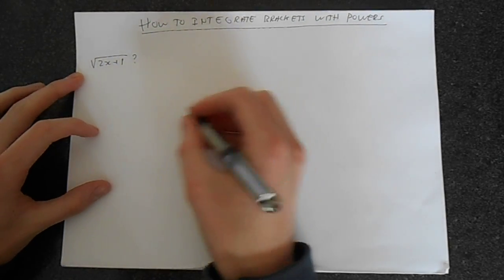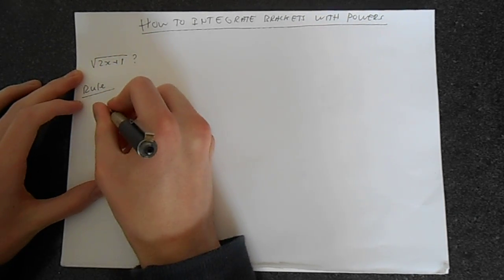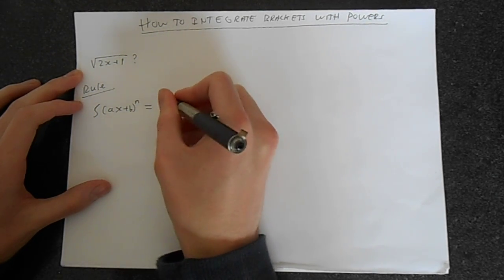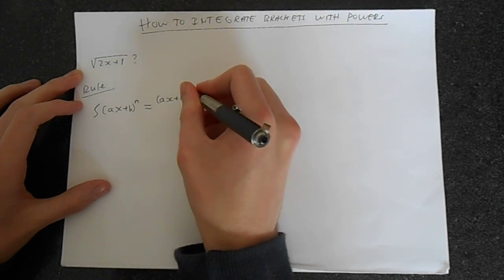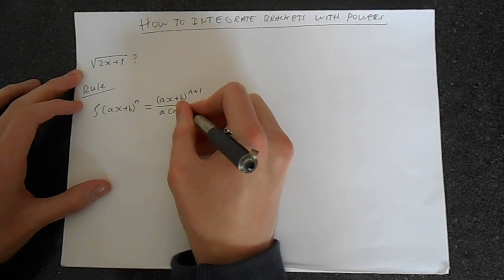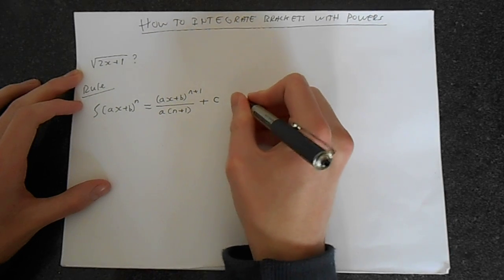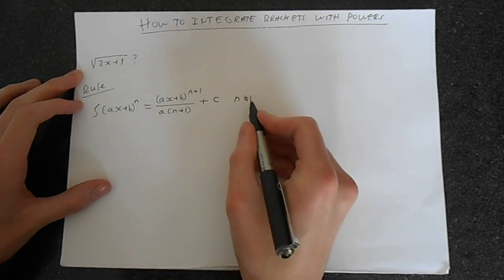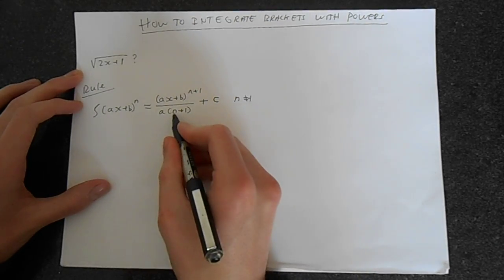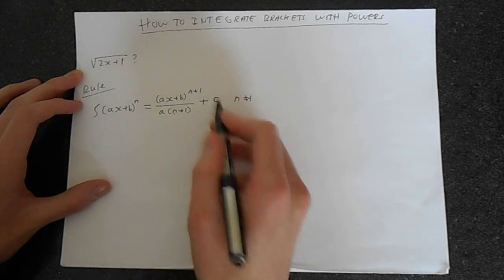So how would you go about doing that? Well there's a simple rule: the integral of ax plus b raised to the power n is equal to ax plus b to the power n plus 1, divided by a(n plus 1), plus c. This is valid for n different from minus 1, because if n is minus 1 you get minus 1 plus 1 in the denominator, which becomes 0 and makes the expression undefined.